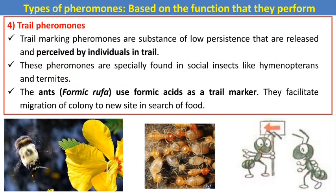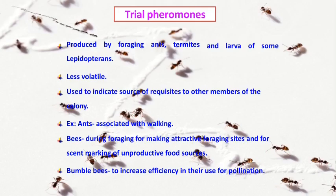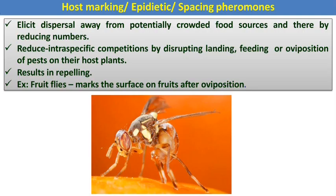Trail marking pheromones are substances of low persistence that are released and perceived by individuals in trails. Highly evolved in social insects like termites and ants. Ants release formic acid as trail markers that facilitate migration of a colony to new sites in search of food. Bees are also attracted towards flowers with the help of trail marking pheromones, and bumblebees use them to increase efficiency in pollination.